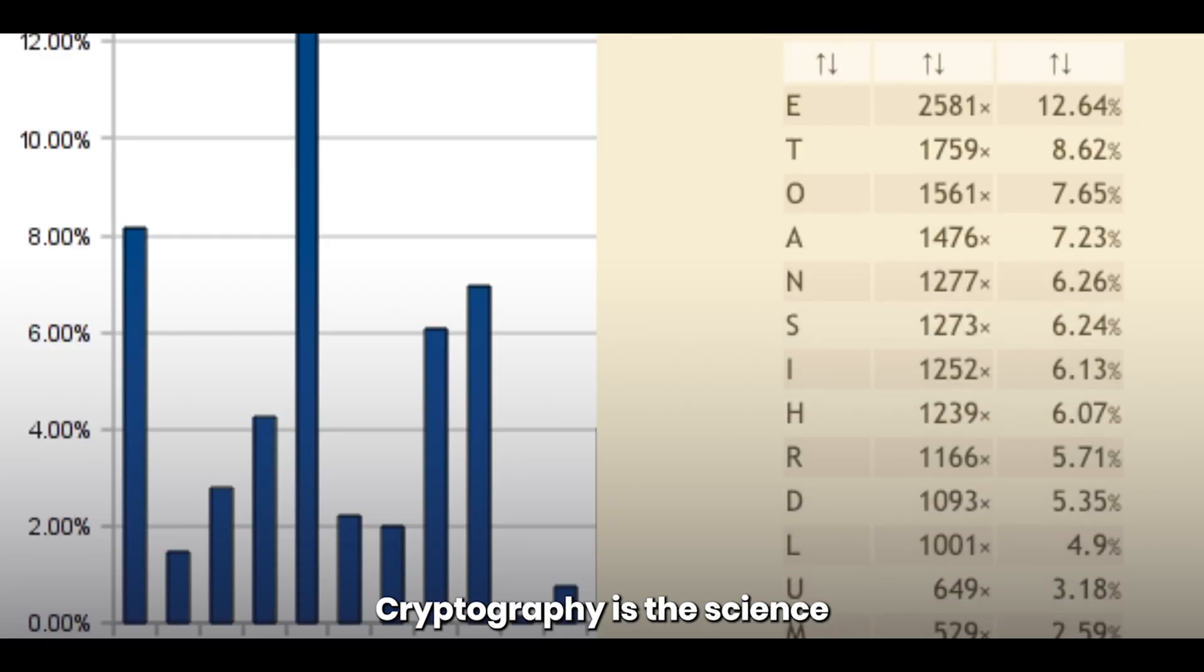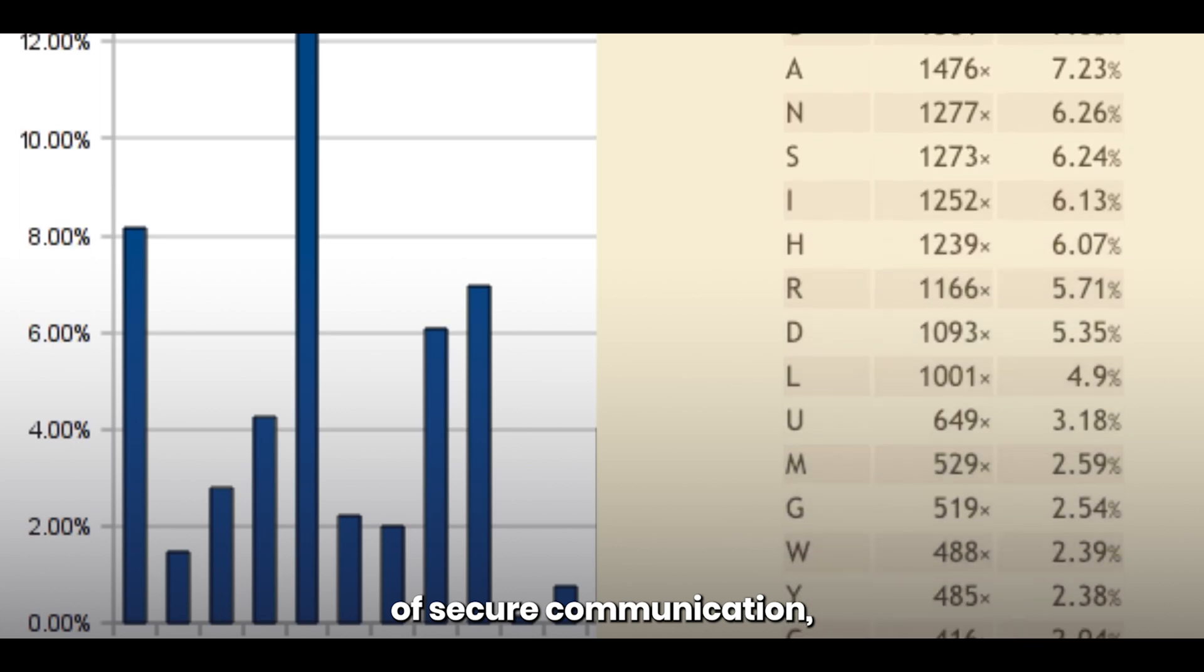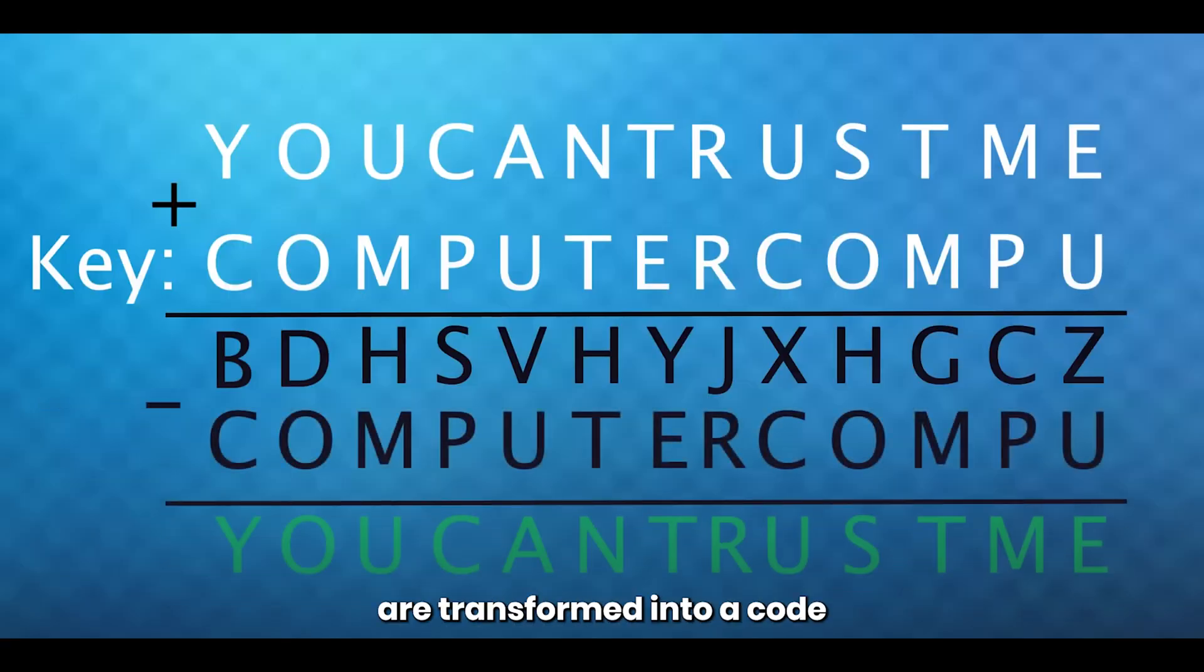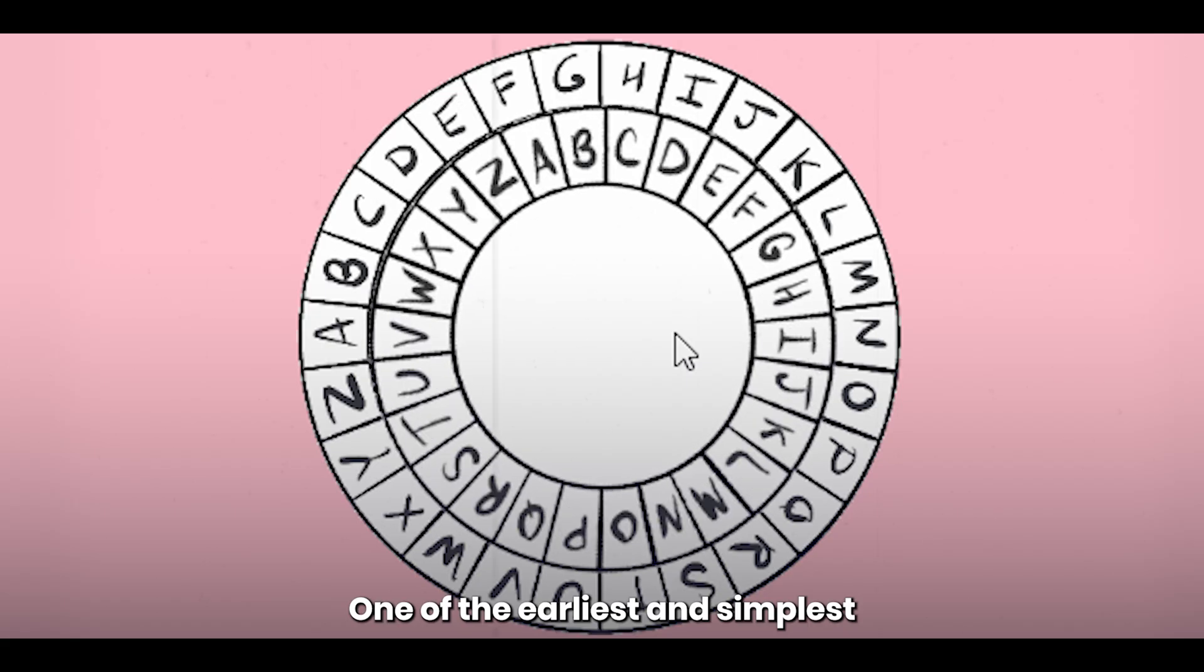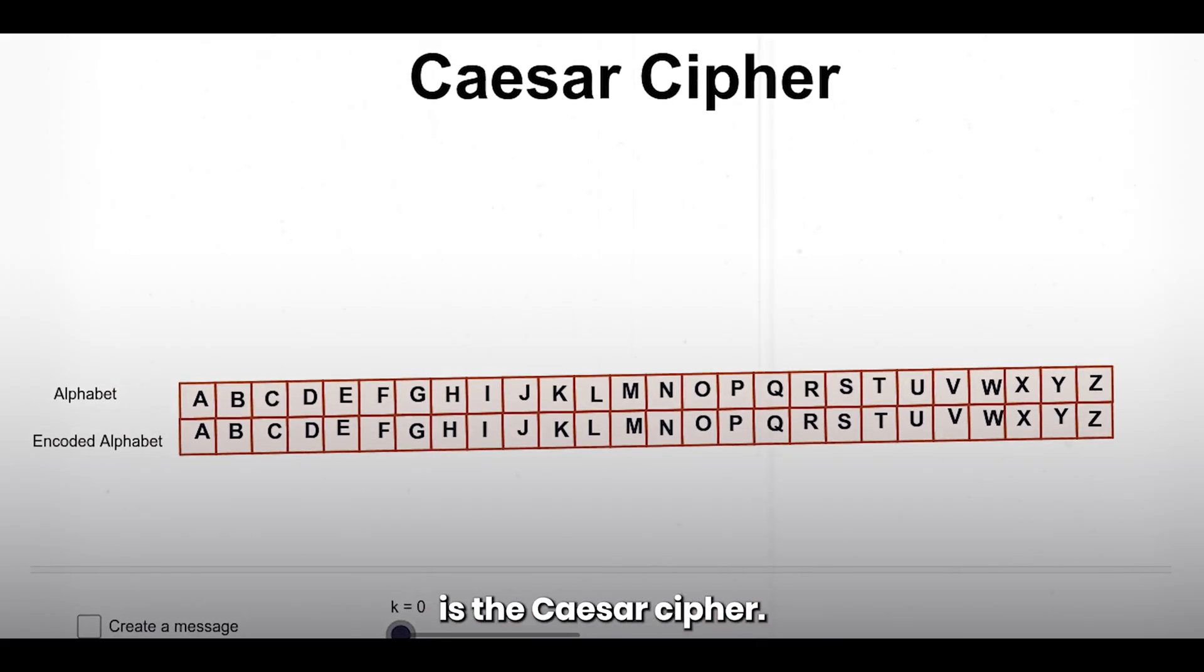Cryptography. Cryptography is the science of secure communication, where messages are transformed into a code that is difficult to decipher without the key. One of the earliest and simplest cryptographic techniques is the Caesar cipher.